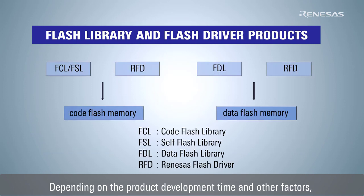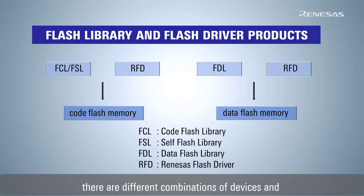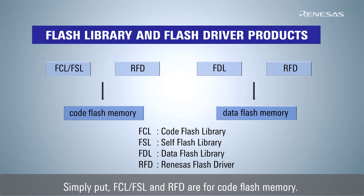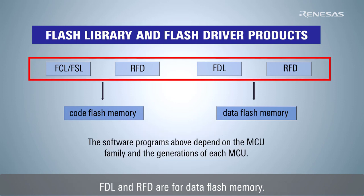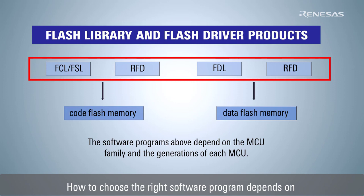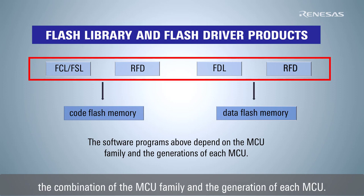Depending on the product development time and other factors, there are different combinations of devices and their compatible products. Simply put, FCL, FSL, and RFD are for code flash memory. FDL and RFD are for data flash memory. How to choose the right software program depends on the combination of the MCU family and the generation of each MCU.